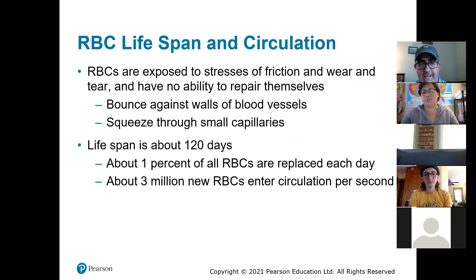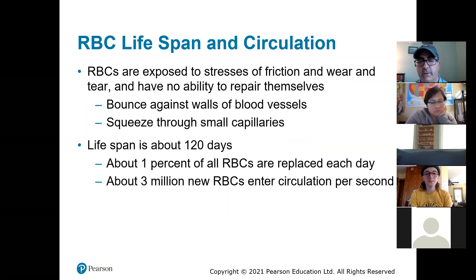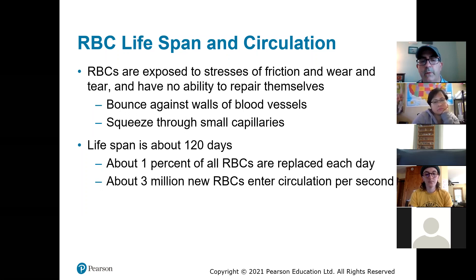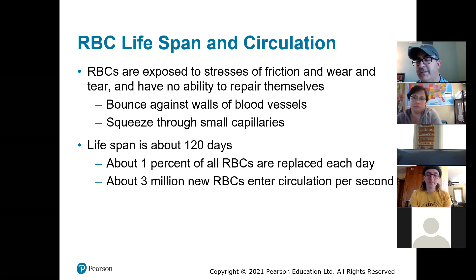How long do red blood cells last? We said they kick out all the organelles because their only role is to transport oxygen and carbon dioxide. Their lifespan is about 120 days — that's about all a red blood cell is good for. So every day you're replacing about 1% of your red blood cells, and about 3 million new red blood cells enter circulation every second, which is crazy to think about.